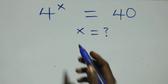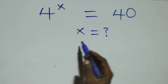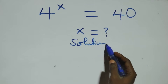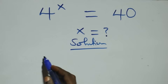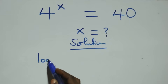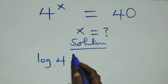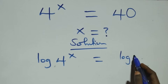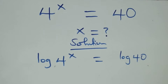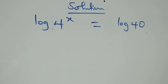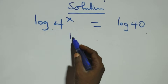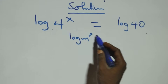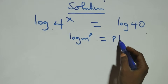How to solve this exponential equation. We take the log on both sides, giving us log 4 raised to power x equals log 40. From here, we apply the power rule of logarithm: log m raised to power p is the same as p log m.